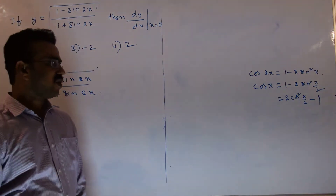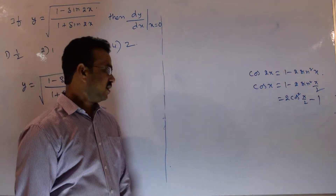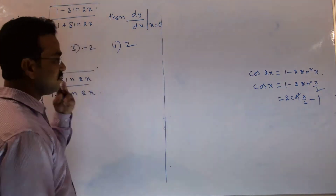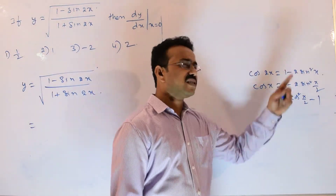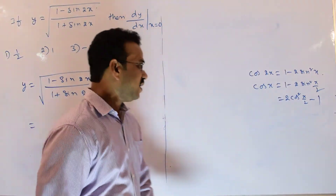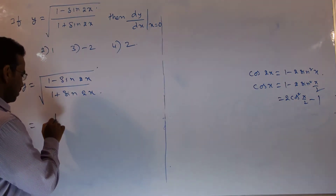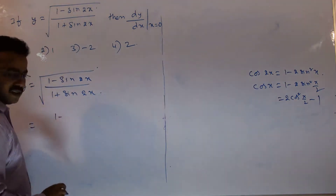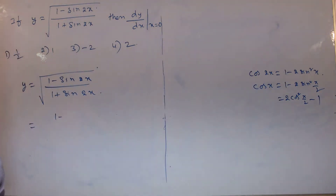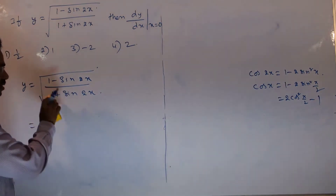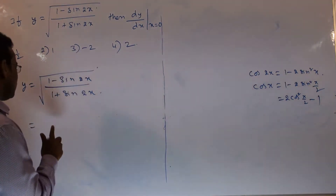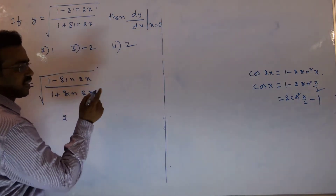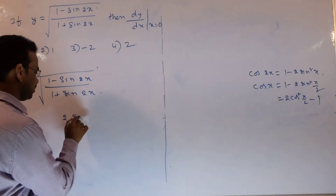I want to eliminate the 1 in the numerator, so I need a minus 1. It would be better to use 1 minus 2 sin²(x/2). So here, 1 minus of minus 1 — the 1s get cancelled — leaving 2 sin²(x/2).